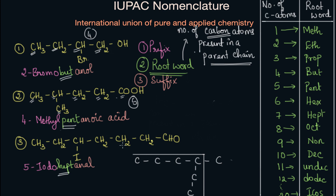Let's go to the next example. We have one, two, three, four, five, six, seven. This is the parent chain — there are no other carbon atoms. So there are seven carbon atoms present. The root word used is hept. And indeed we have hept here. This is how we can easily understand what root word is being used, and given the root word, we can figure out how many carbon atoms there are.